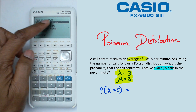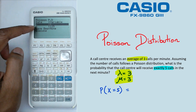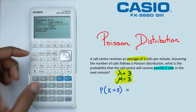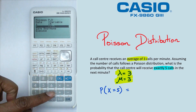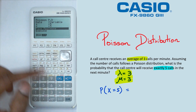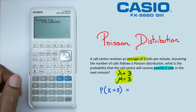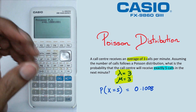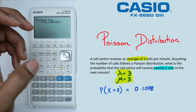In here, we're going to make sure that we're working with variable. We go into x value — the x value in this case is five. Then our lambda, or the mean, is going to be three. Once we do that, we just press EXE again, and that gives us a probability of 0.1008. We're going to stick with four decimal places for probabilities, particularly in distributions.